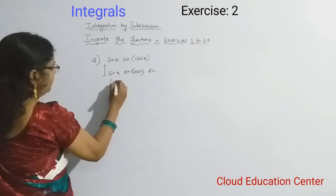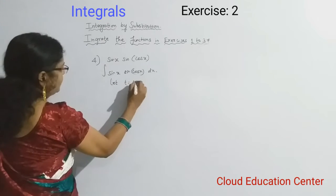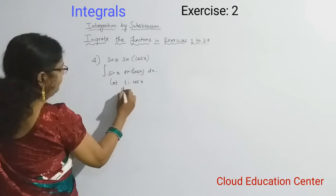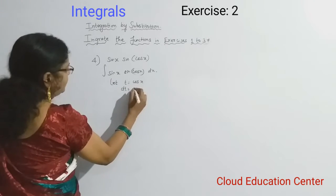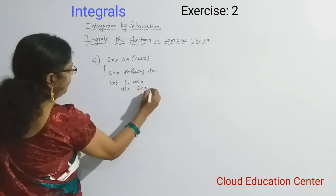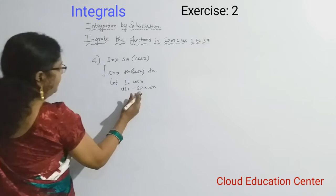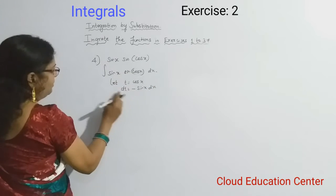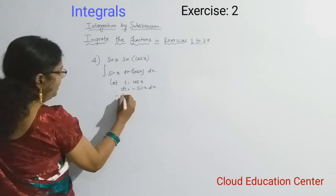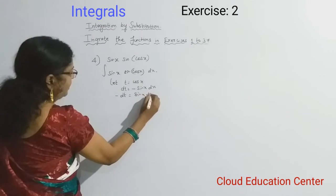Here we will take t equal to cos x. When you differentiate t, we will get dt. When you differentiate cos x, we will get minus sin x dx. But here we don't have minus, so we will take minus here. So we will get minus dt equal to sin x dx.